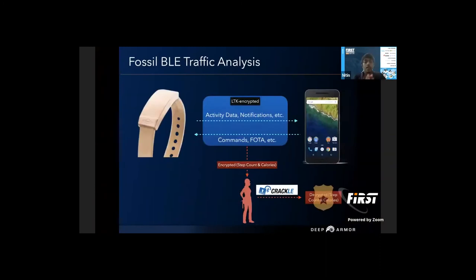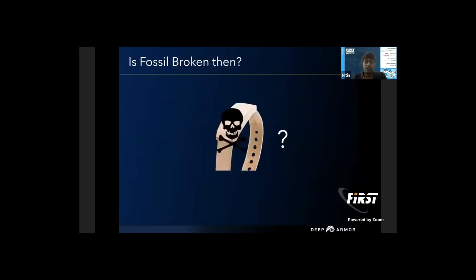What happened here: the Fossil device was trying to pair with the mobile phone, we were able to sniff the traffic using Ubertooth, and ended up with encrypted packets. When those encrypted packets were passed to Crackle, we were able to get the decrypted packets. Does this mean Fossil is broken and vulnerable to attack? Before concluding, we will also see another form of vulnerability — how another ecosystem challenge can cause problems in Bluetooth communication.